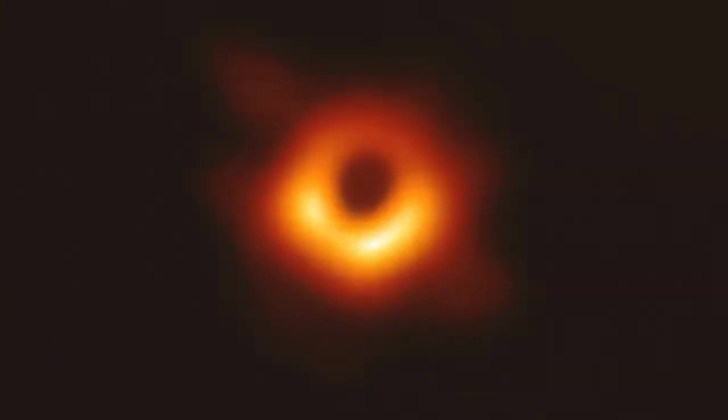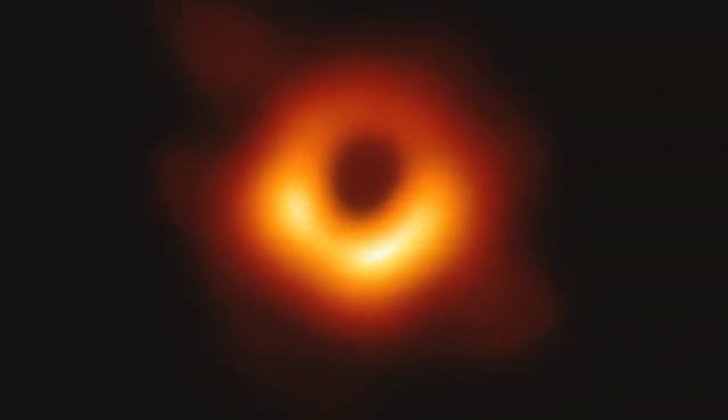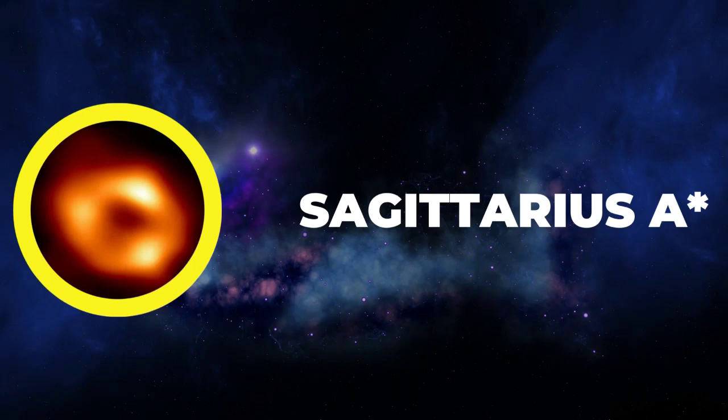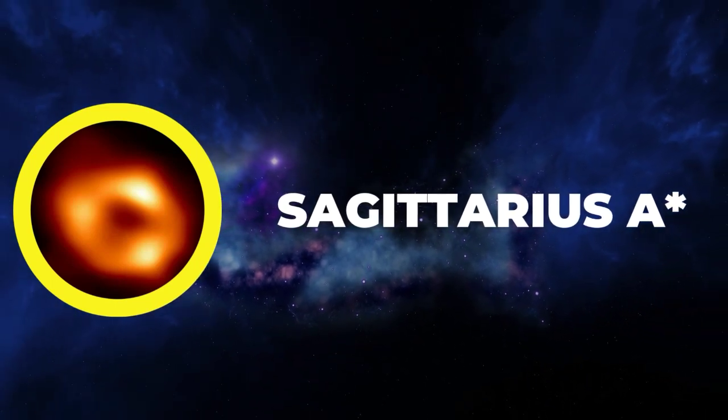Using telescopes all around the Earth to make one planet-sized telescope, EHT captured a now famous image of this accretion disk. In May 2022, astronomers also captured the image of our galaxy's supermassive black hole using the Event Horizon telescope.